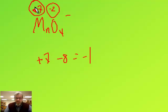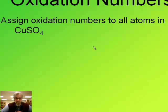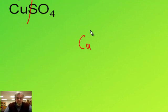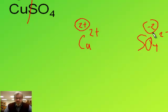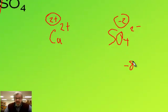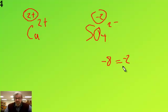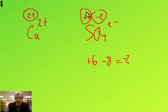Here's a compound: assign oxidation numbers to all atoms in CuSO4. This is an ionic compound, so I'll split it into its ions. The first must be copper two plus, because CuSO4 is one-to-one with sulfate, which is SO4 two minus. Copper is a monatomic ion, so its oxidation number equals its charge: two plus. In sulfate, oxygen is negative two — negative two four times gives minus eight. But the total charge on the ion is minus two, so sulfur must be positive six, because positive six and negative eight add up to the total charge of negative two.